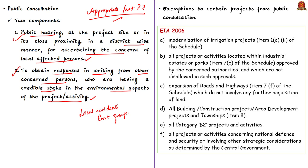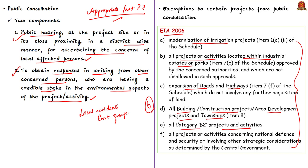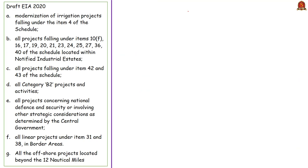As per the existing exemptions in EIA 2006 notification, six project categories are exempted from public consultation: modernization of irrigation projects; all projects or activities located within industrial estates; expansion of roads and highways; all building or construction projects or area development projects and townships; all category B2 projects and activities; and all projects or activities concerning national defense and security or involving other strategic considerations as determined by the central government.